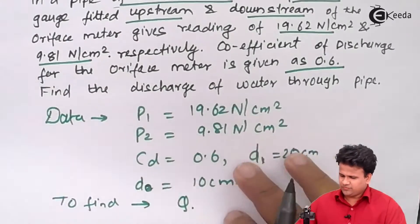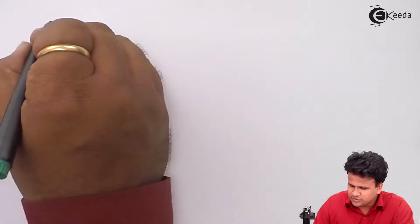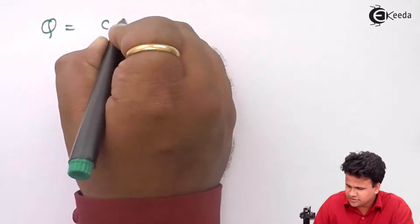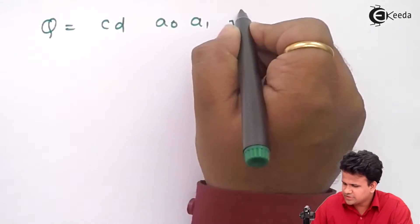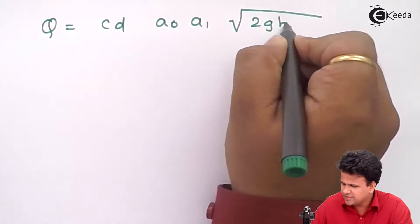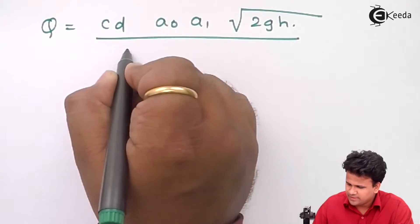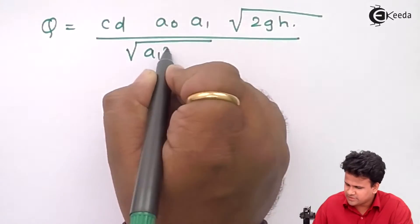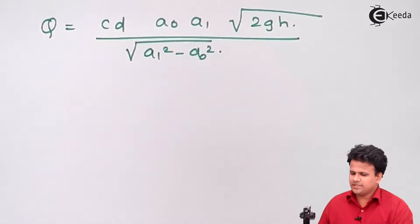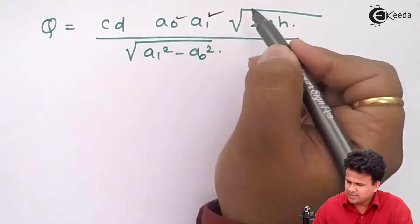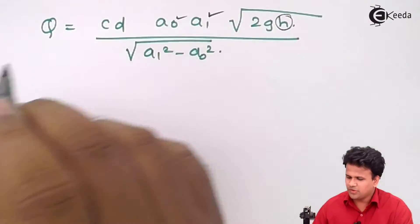Let us write down the formula for q. We know that q equals coefficient of discharge into a0 into a1 square root of 2gh upon square root of a1 square minus a0 square. We need to calculate a0, a1 as well as value of h.